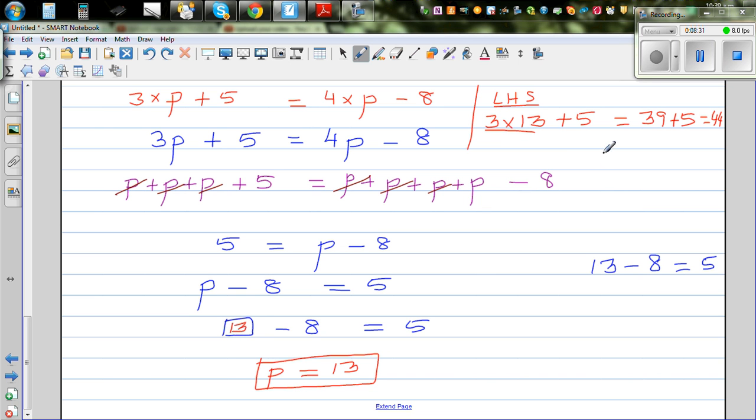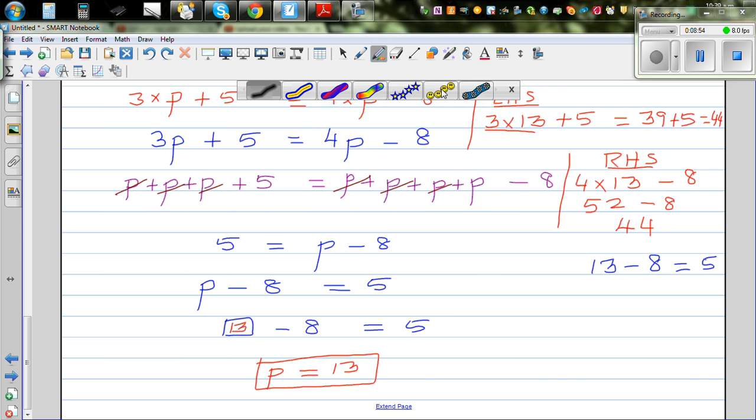And let's do the right hand side. So I'll do the right hand side here. Is 4 times 13 minus 8. So 2 times 13 is 26. So this is 52 take away 8, which is also 44. So you can give yourself a smiley face. Because you have checked your left hand side is equal to your right hand side.